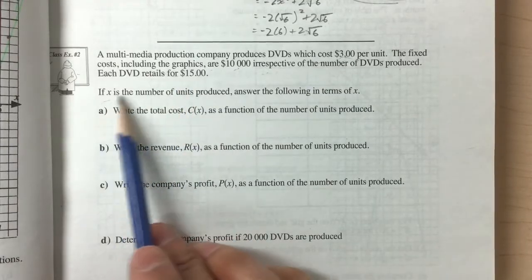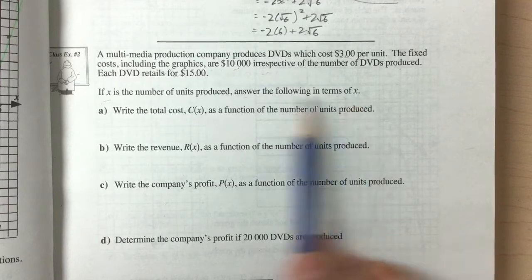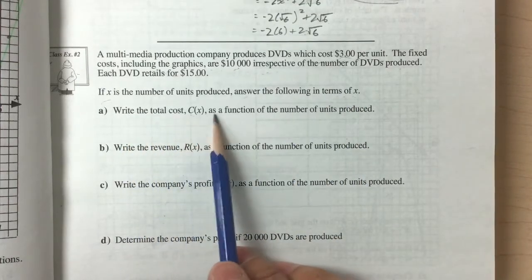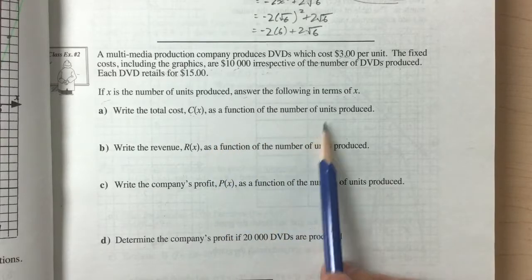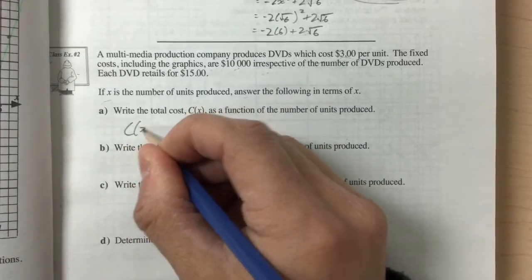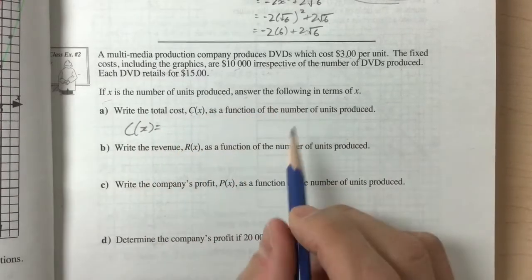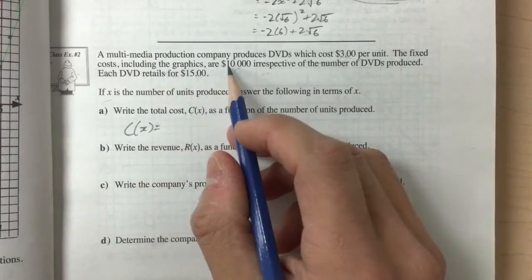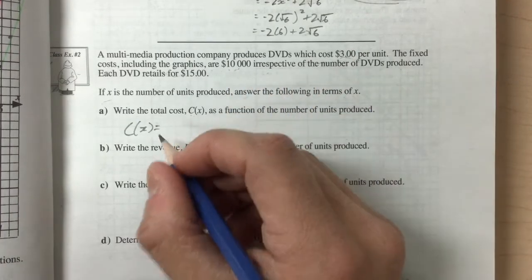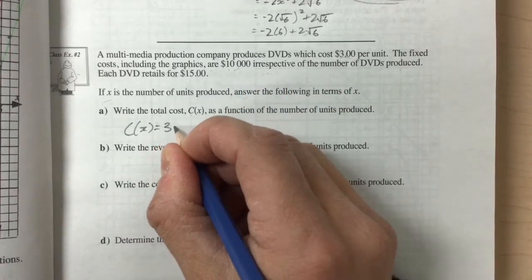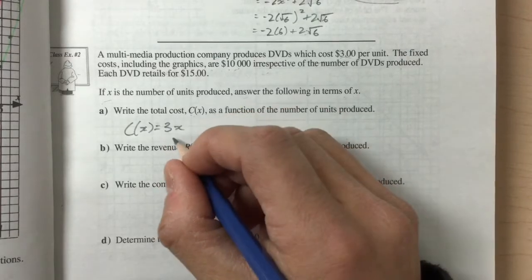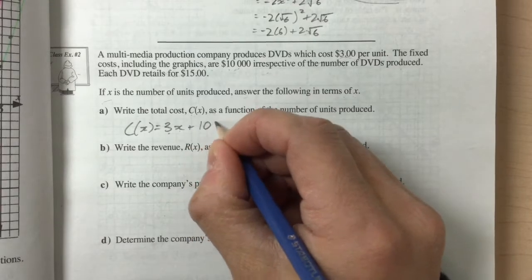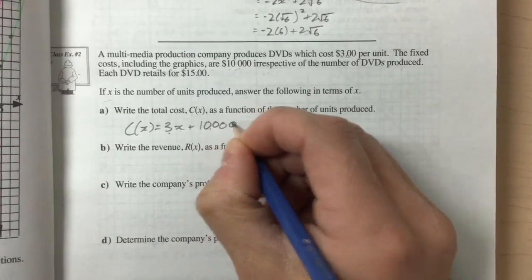And so if x is the number of units produced, answer the following in terms of x. So if we want to write the total cost as a function, c of x, the number of units produced. So c of x is equal to, the fixed cost includes the graphics are $10,000 and $3 per unit. So 3x, it costs $3 per unit plus the $10,000 irrespective of the number of units produced.